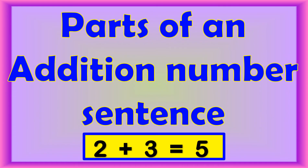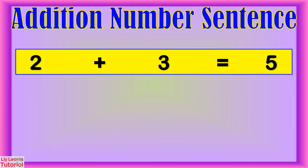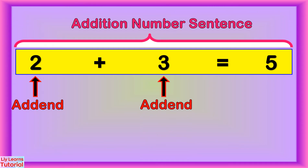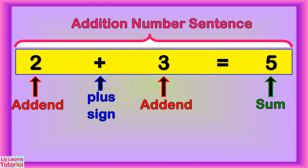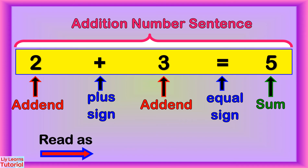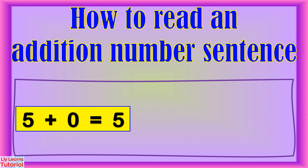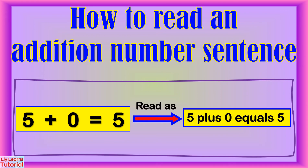Let's look at the parts of an addition number sentence. This is an addition number sentence. Two and three are the addends. Five is the sum. This is the plus sign and an equal sign. You can read this as two plus three equals five. The example below is read as five plus zero equals five.